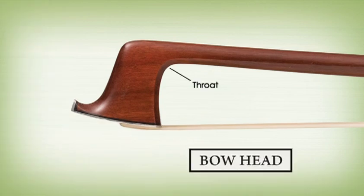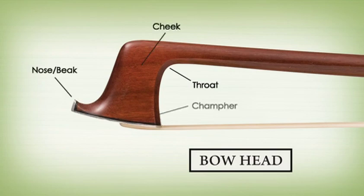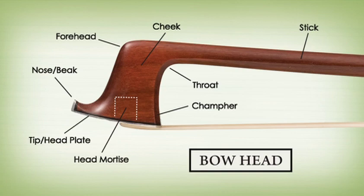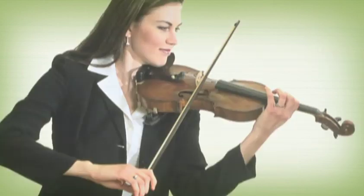Other parts on the head are the throat, cheek, nose, etc. The tip is generally made of a different material than the rest of the head and is designed to take the force of any blow that might damage the head.